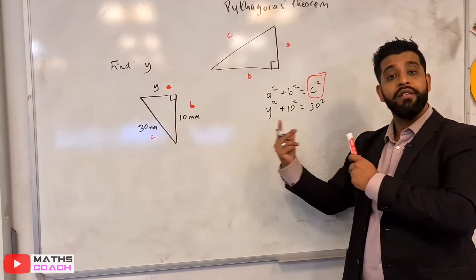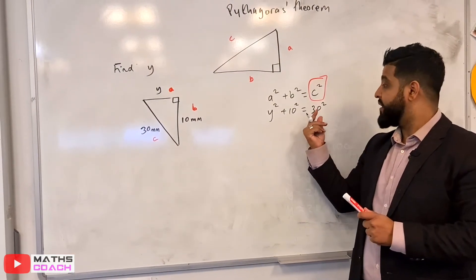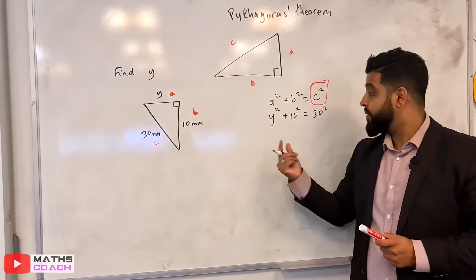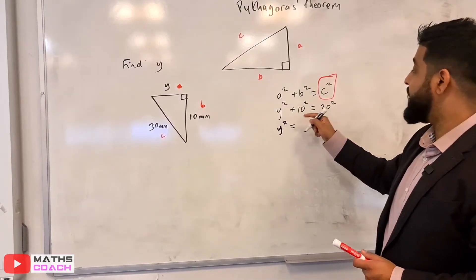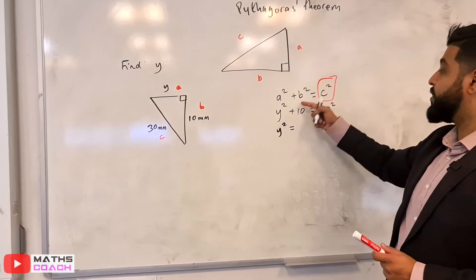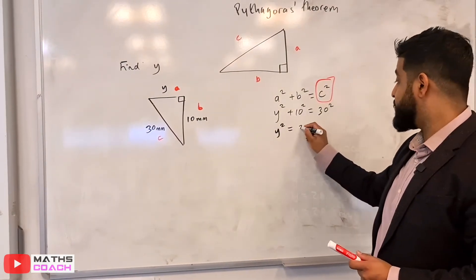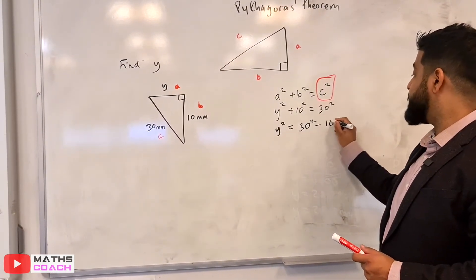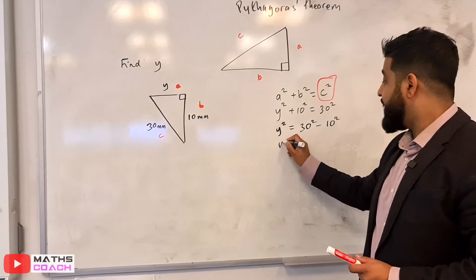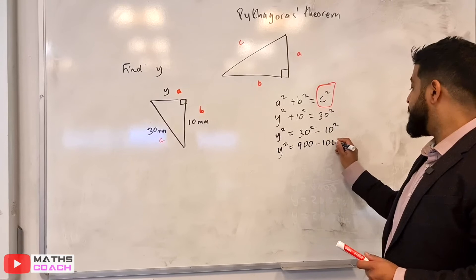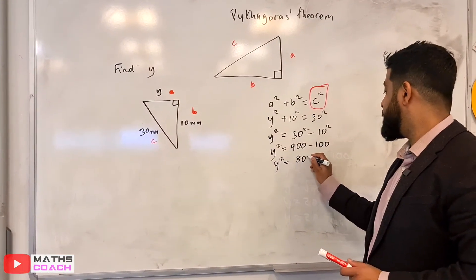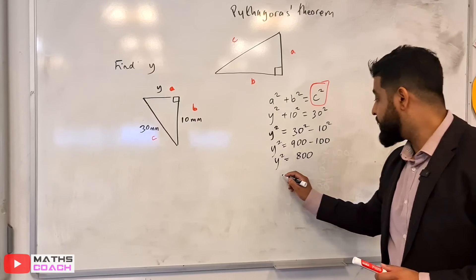Now I need to rearrange this because I'm not finding like the previous question, C. It's Y that I need to find. So I'm to make Y the subject. So Y squared is equal to, and to do that, I'm going to take this plus 10 squared to the other side by minus it. So it's going to be 30 squared minus 10 squared. And therefore that gives me 30 squared is 900. 10 squared is 100, which will give me 800.